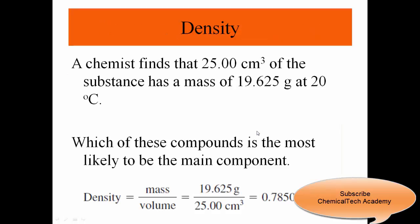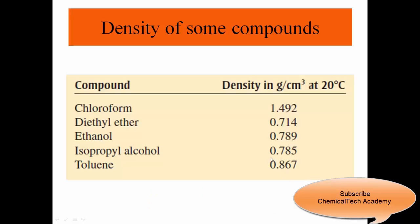Let's have an example. A chemist finds that 25 cubic centimeters of a substance has a mass of 19.625 grams at 20 degrees Celsius. Which of these compounds is the most likely to be the main component? The density is mass over volume: 19.625 grams divided by 25.00 cubic centimeters gives 0.7850 grams per cubic centimeter. Going back to the table, that is very close to isopropyl alcohol, so the answer is isopropyl alcohol.